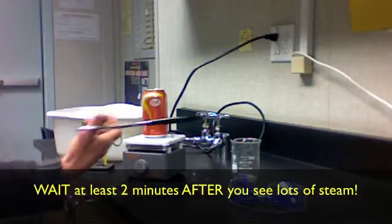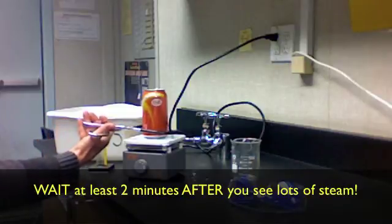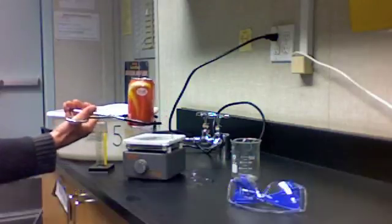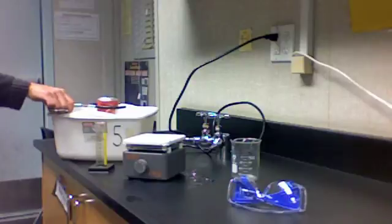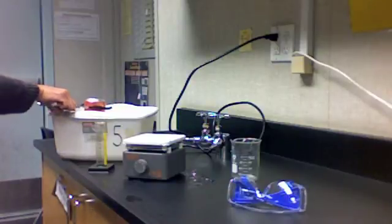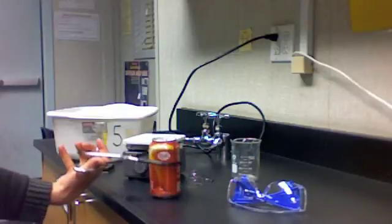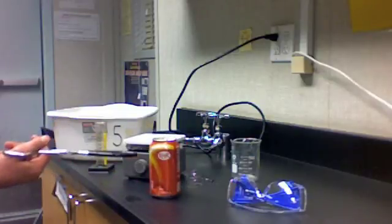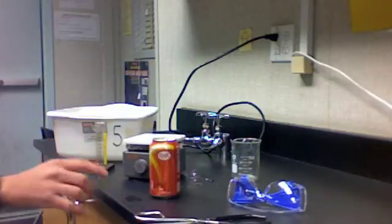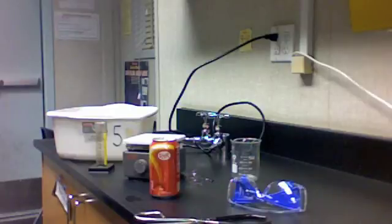And at that point, you're going to go ahead and use your beaker tongs, grab the bottom of the can, and then very quickly turn it upside down into the liquid water bath that you have. You have to do that very quickly. You have to make sure the whole top of the can is submerged, and you need to make sure that you have your goggles on while you're doing that part of the lab.